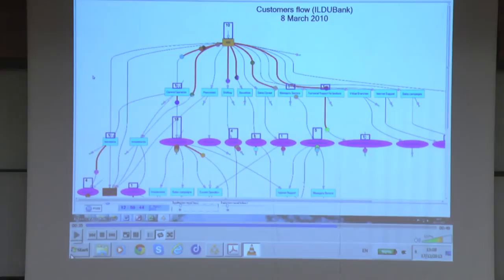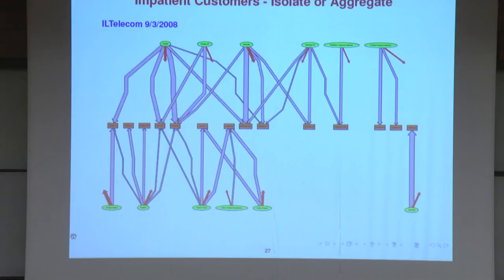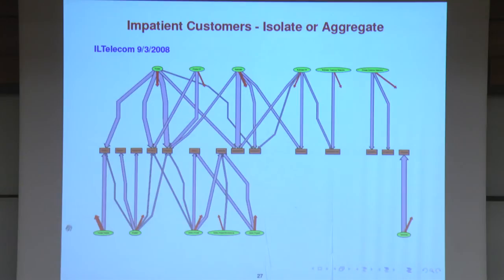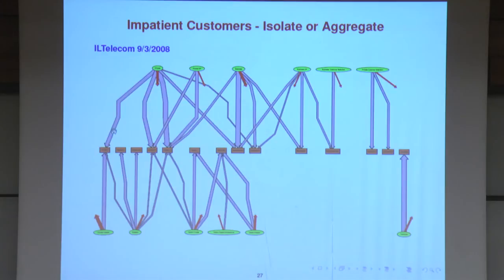We can analyze the structure of the system, which is important to understand its dynamics. This is another call center — these are the queues, these are the pools of agents, and this topology shows who can do what. It's a very complex system that has to run in real time, matching customer needs with server skills — for example, serving 10,000 customers per hour.